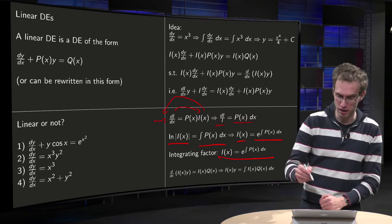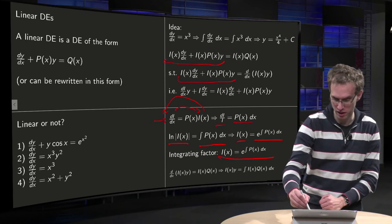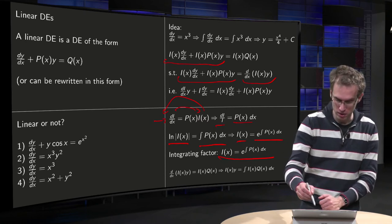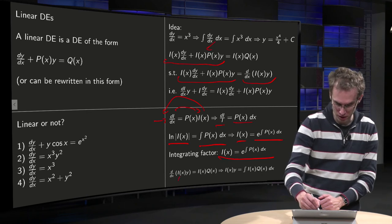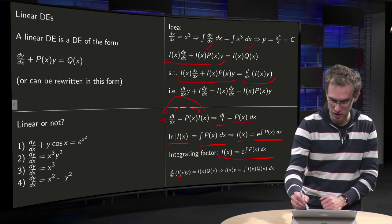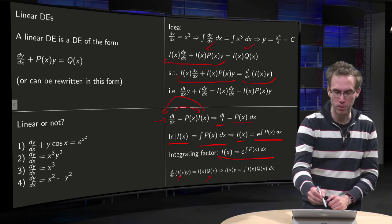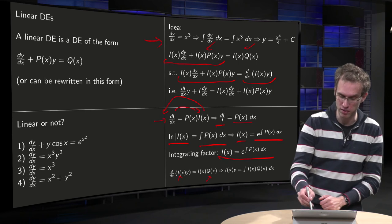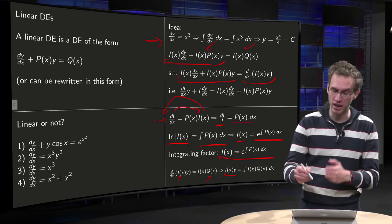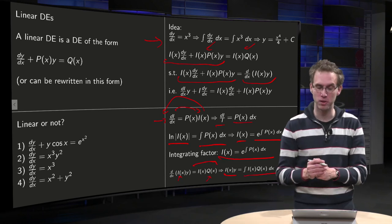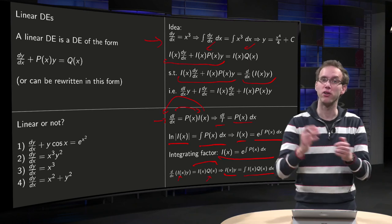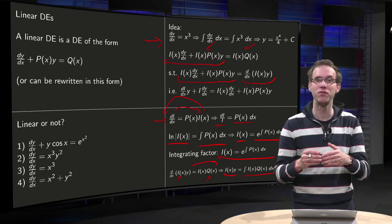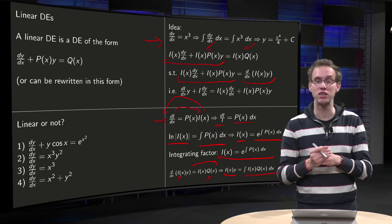We choose our integrating factor such that the left-hand side becomes the single derivative of i(x) times y, so that derivative equals i times q on the right-hand side. Now you can just integrate both sides with respect to x. Integrating the left-hand side gives i(x) times y, and the right-hand side has only x's, so you can integrate it directly. In the final step you divide by i, and there you have your y. That's the idea of the integrating factor — it looks cumbersome but works really well for nice problems, as we will see in examples in future videos.